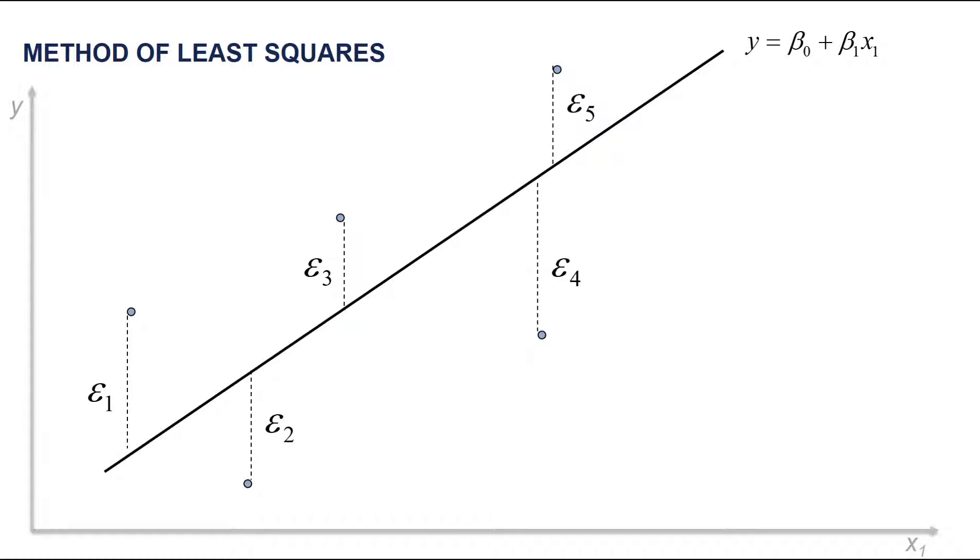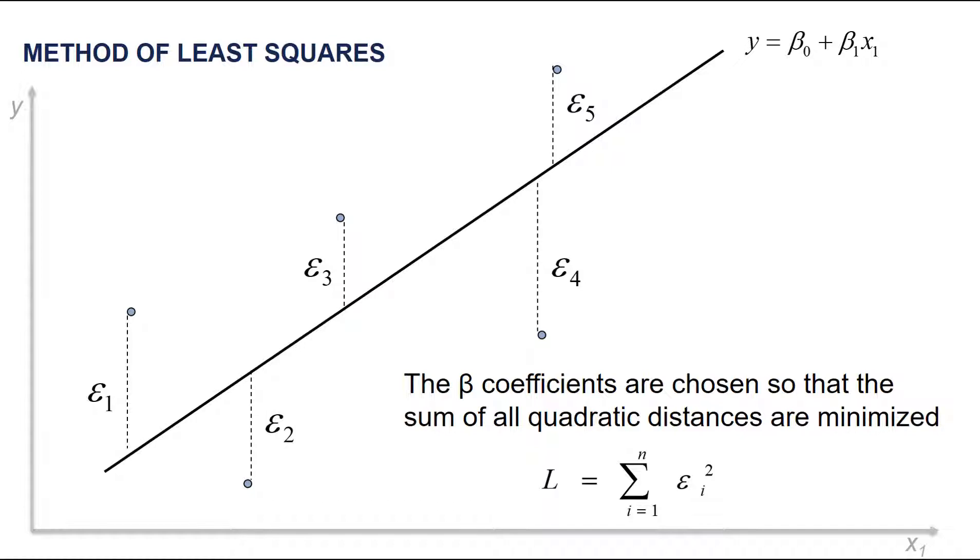These are the estimated residuals based on the model we have estimated. The method of least squares means that we choose these beta coefficients beta 0 and beta 1 in such a way that the sum of all quadratic distances are minimized. So we will try to minimize this sum of quadratic distances or quadratic residuals.